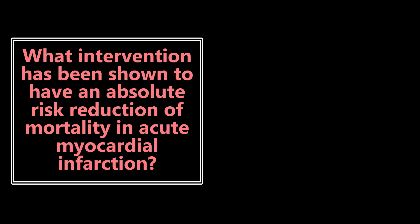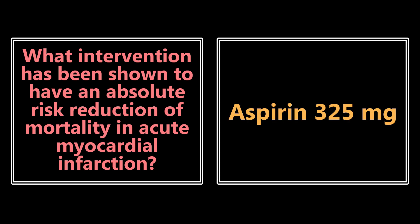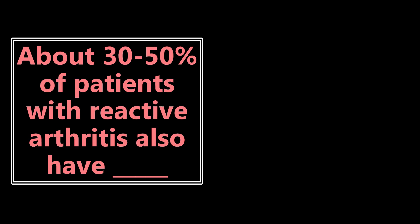What intervention has been shown to have an absolute risk reduction of mortality in acute myocardial infarction? The answer is aspirin — 324 or 325 milligrams. That has an absolute risk reduction of mortality in acute myocardial infarction, which is why we always want to make sure high-risk patients are getting aspirin if they're having chest pain.